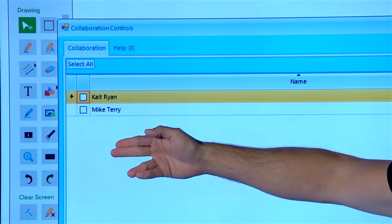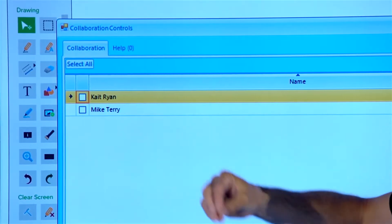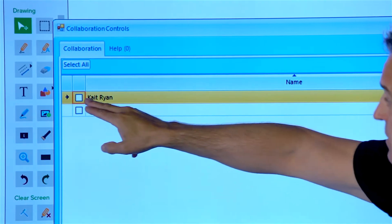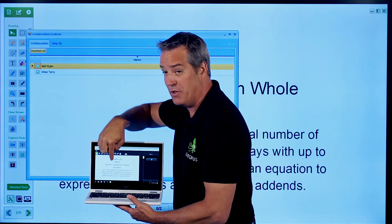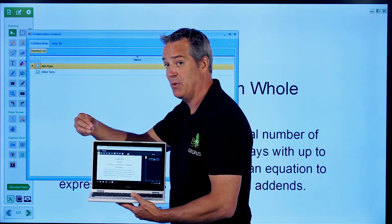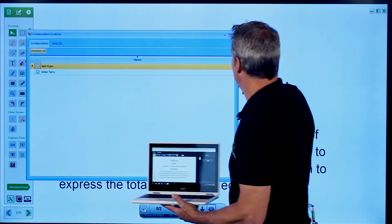And this dialog here is what we actually use to allow them to collaborate and share content back to the main screen. So if I wanted to allow everybody to be able to draw on their device, annotate, share those objects back to the main screen, this is where I would turn that control on.